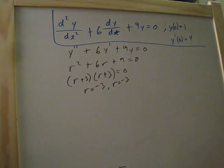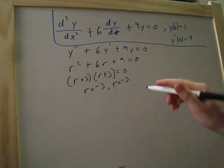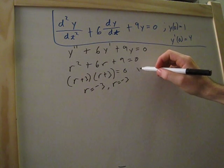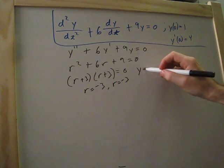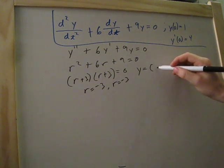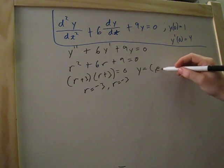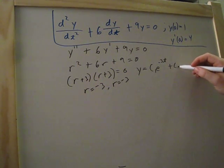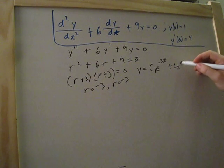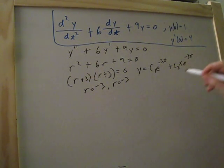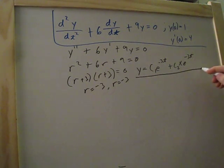As we showed in the last videos, we now know how to solve this thing. So we'll come up with the general solution. This is going to be y is equal to c1 e to the negative 3t plus c2t times e to the negative 3t. Okay, so now we have this.